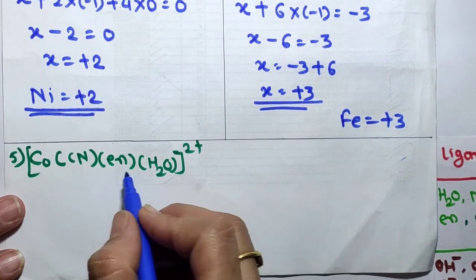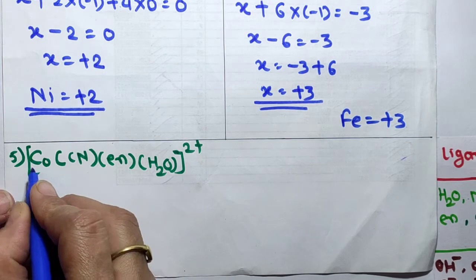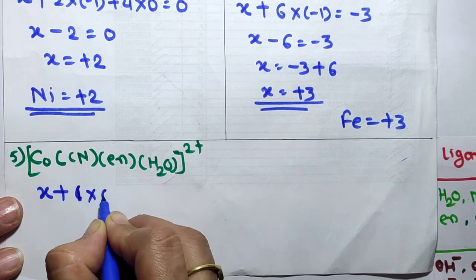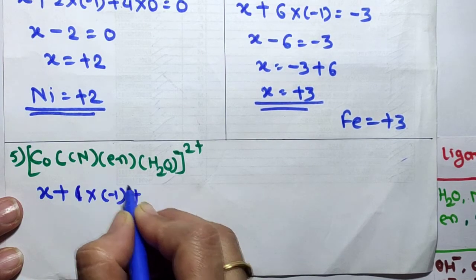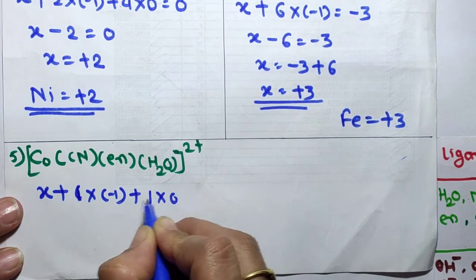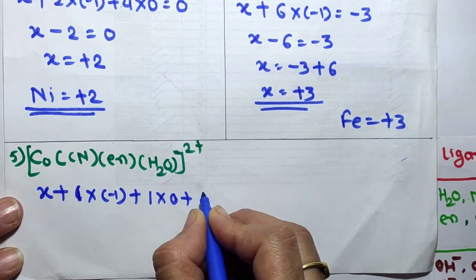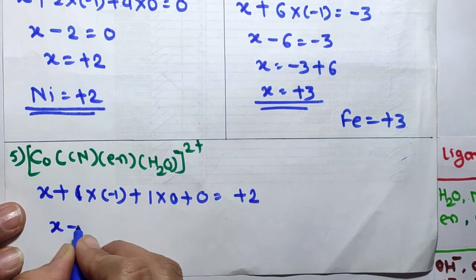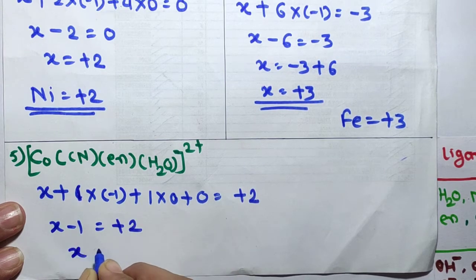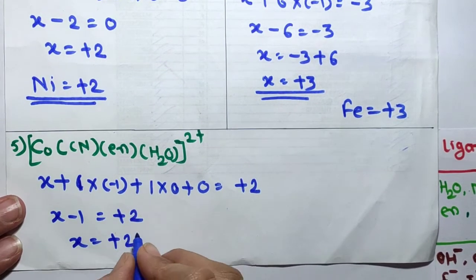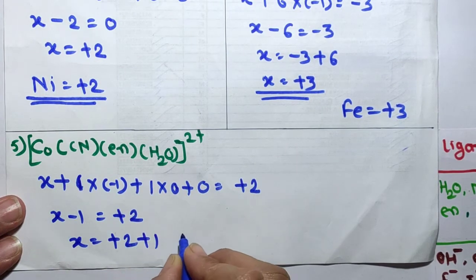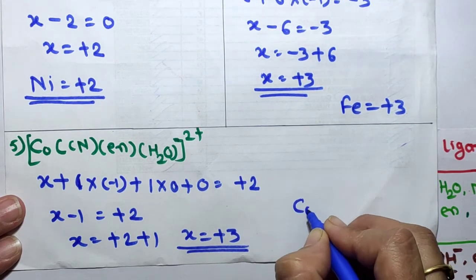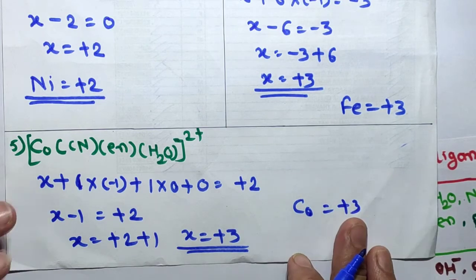Fifth example: [Co(CN)(EN)(H2O)]²⁺. Central atom is Co with oxidation number X. CN⁻ contributes −1, EN is 0, and H2O is 0 (neutral field ligands). So: X + 1×(−1) + 1×(0) + 1×(0) = +2. That is X − 1 = +2, therefore X = +3. Cobalt has oxidation state +3 in this complex.